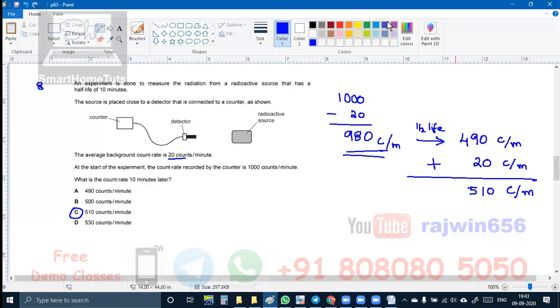Same procedure I have followed which we had done that background radiation by graph. This question is without graph. What I have done over here, I have taken the original count rate 1000 counts, subtracted background count rate, I get this count rate because of only radioactive substance. Make half of that half life after 10 minutes. 980, half of that is 490. But here also background radiation is going to be there and then you add that. This is how I get the answer.